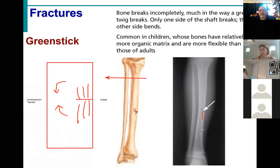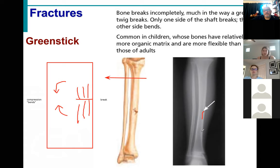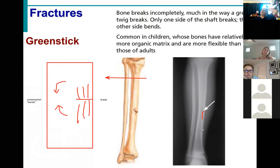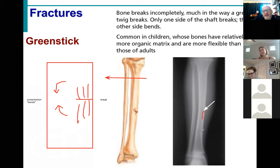This can only occur when the bones are still flexible, in children. This very rarely occurs in adults because our bones aren't flexible enough to bend and compress like that. With the green stick fracture, because of the bending and flexing, you can get some shredding on the break side - this is somewhat unique to the green stick fracture.